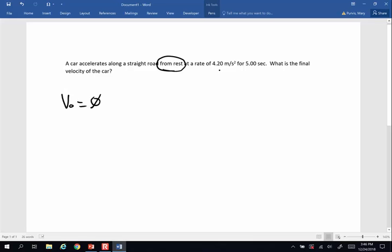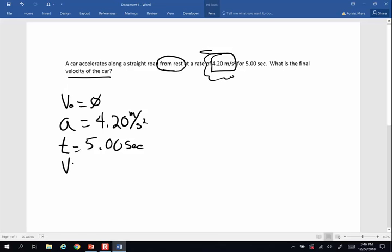At a rate of 4.2 meters per second squared. So what is this? Let your units be a big neon sign telling you what's going on. Meters per second squared. So what kind of variable is measured in meters per second squared? That's my acceleration for 5 seconds. And that's my time. The question is, what is the final velocity of the car? So that's VF is my question mark. Please get in the habit of writing down everything you know. Please get in the habit of putting a question mark for the thing you do not know.